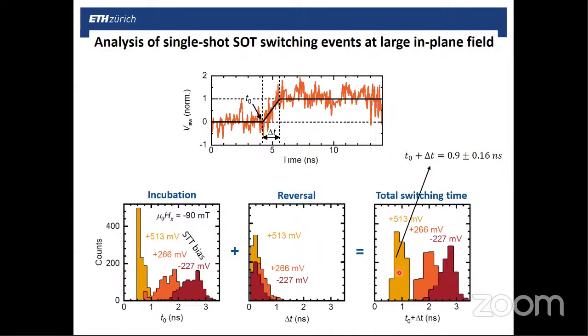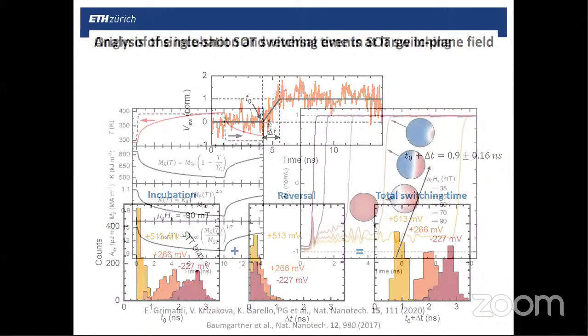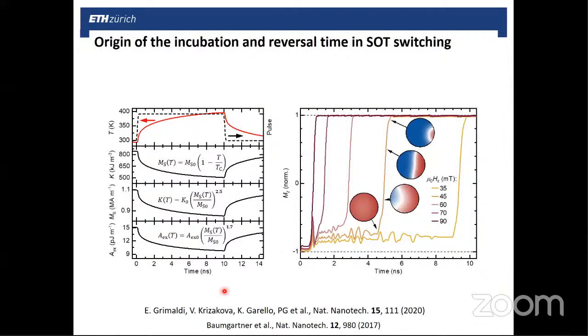This means that all of the trials basically switch within a nanosecond plus or minus 100 picoseconds. That's really good for the reproducibility of the switch. So then, as I said at the beginning, we do not expect an incubation time in SOT switching. So why is there one, and why is it so large? In order to understand that, we have to take into account the fact that when you measure very fast, contrary to DC measurements or microsecond-long pulse measurements, the device is initially cold.